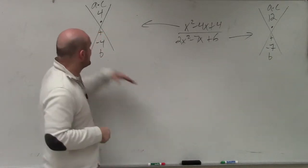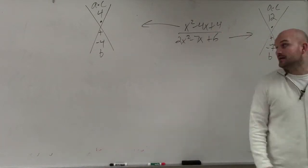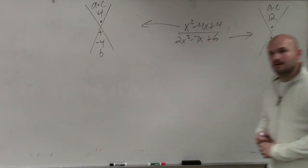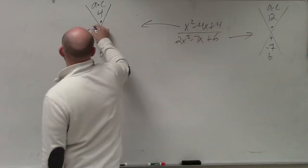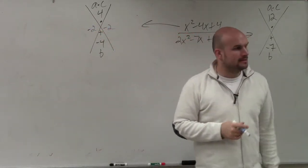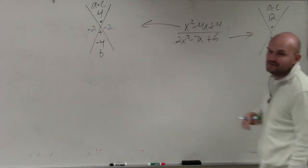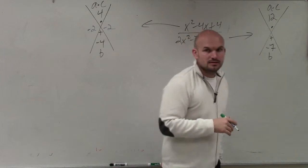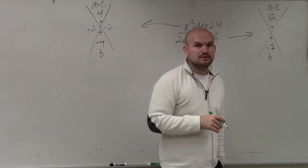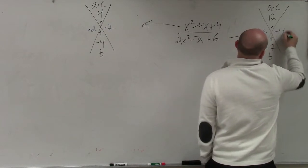So now, what we need to do is identify what two terms multiply to give me 4, but then add to give me negative 4. Negative 2 and negative 2. Everybody agree with that? Now, the next one is what two numbers multiply to give me 12, but add to give me negative 7. Negative 3 and negative 4.